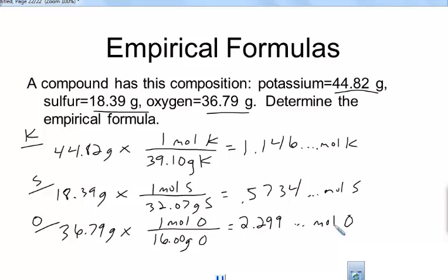If I do it for oxygen, I get 2.299 and more. That's moles of oxygen. Well, this is a mole ratio. We can see the mole ratio of everything. So we could say, hey, the empirical formula is K 1.146, S 0.5734, and O 2.299. Well, that doesn't look very clean. So we need to get a lowest whole number mole ratio. So how do we do that? Every time we do it, we're going to divide by the smallest amount of moles.